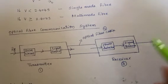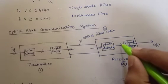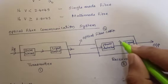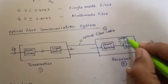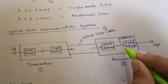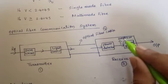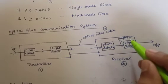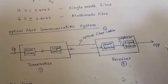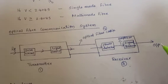The signal passes through the signal restorer circuit. The amplifier is added to amplify the signal. Finally, the audio and video signals are recovered at the output.